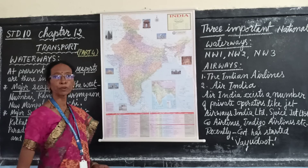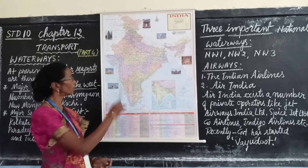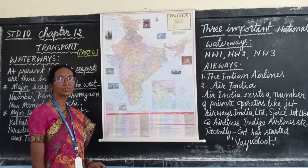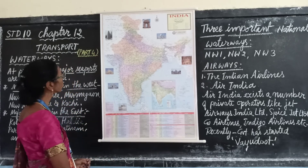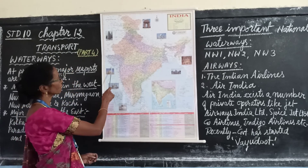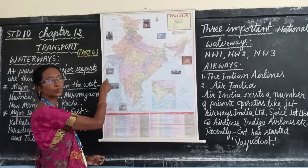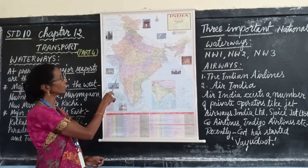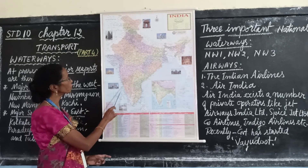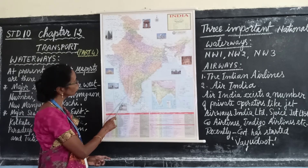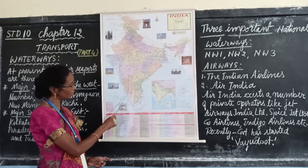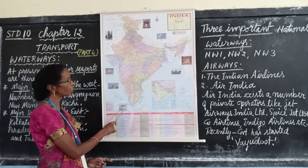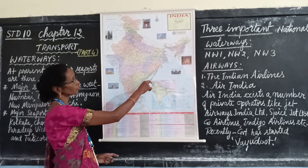In our country there are many important ports on both coasts. On the western coast, the main seaports are Kandla in Gujarat, Mumbai — the largest seaport — in Maharashtra, Marmagao in Goa, New Mangalore in Karnataka, and Kochi and Thiruvananthapuram in Kerala.